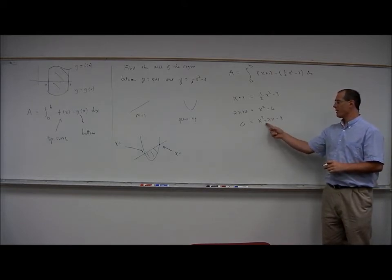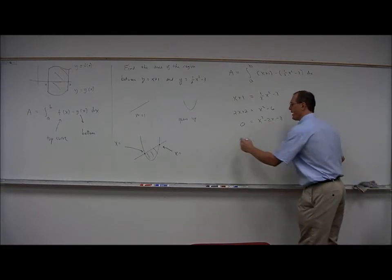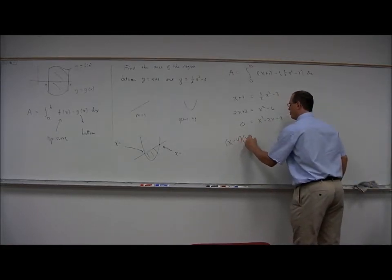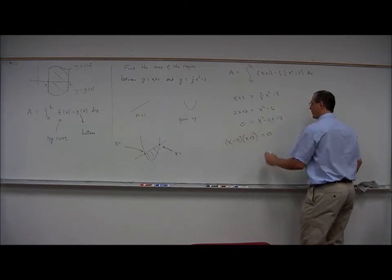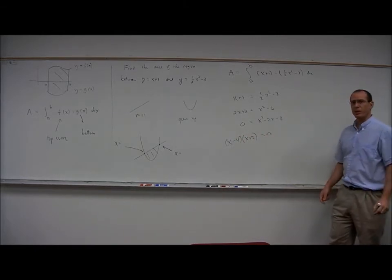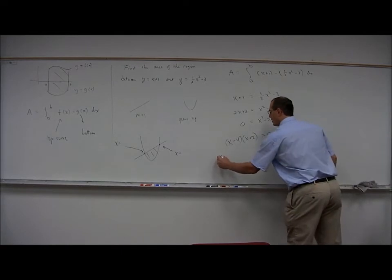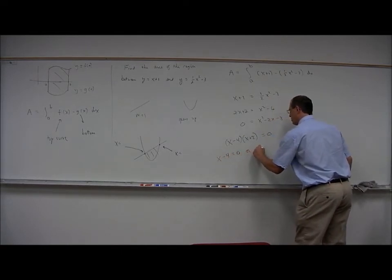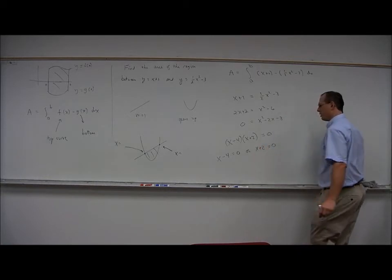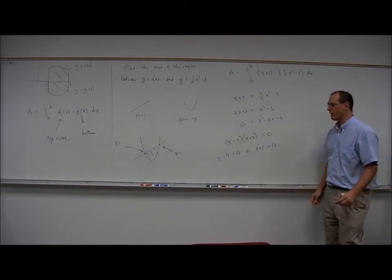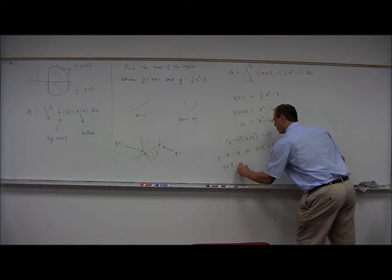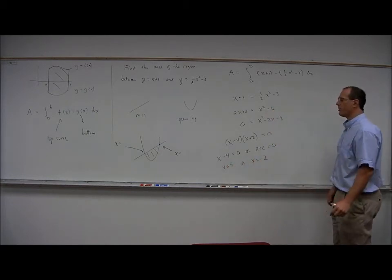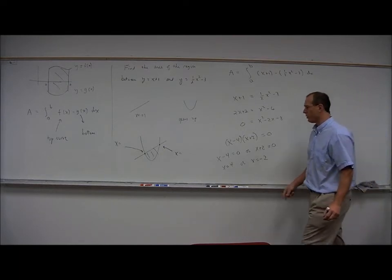We could solve this equation either using the quadratic formula as a last resort, or hopefully by factoring this quadratic. Notice that x squared minus 2x minus 8 does factor into x minus 4 times x plus 2. Since the right-hand side is 0, we can use the zero product principle. x is equal to 4 or x is equal to negative 2. So those are the two x values where the curves cross.